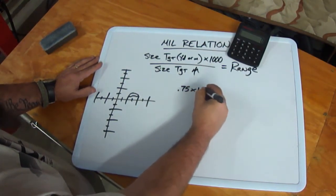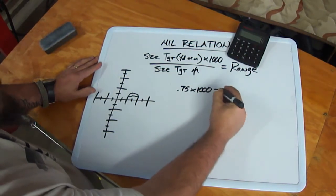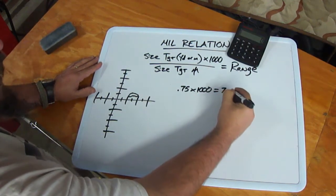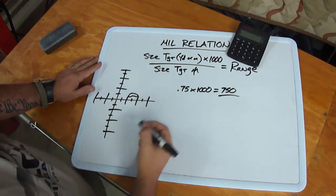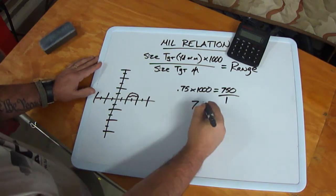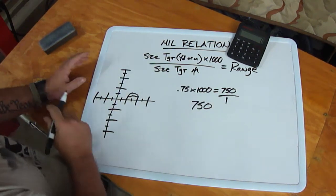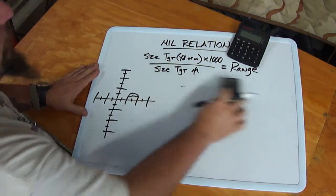When we multiply that by a thousand, or we move our decimal spot three spots to the right, we get 750. In this case, I drew it out exactly 1 mil, so our jelly bean is 750 yards away. It's really pretty straightforward.